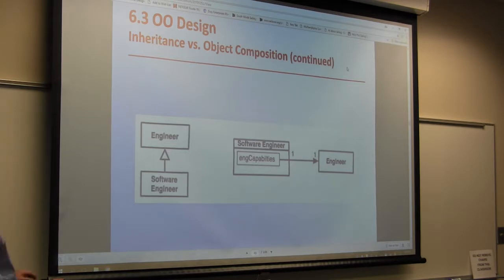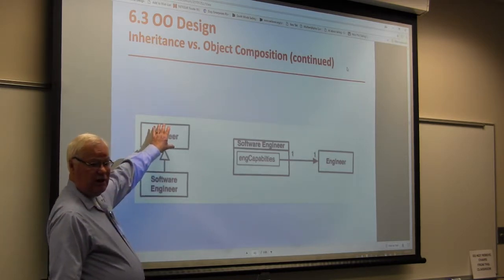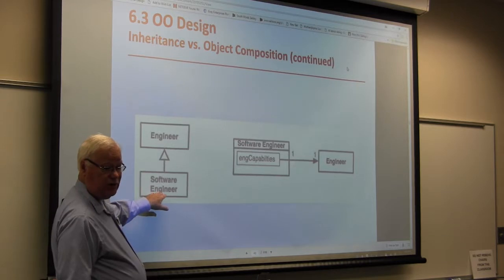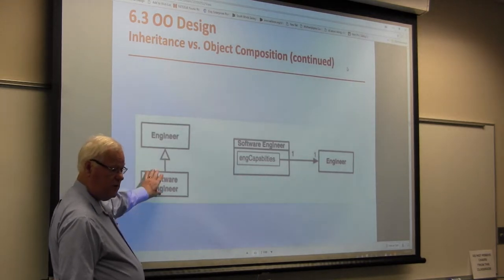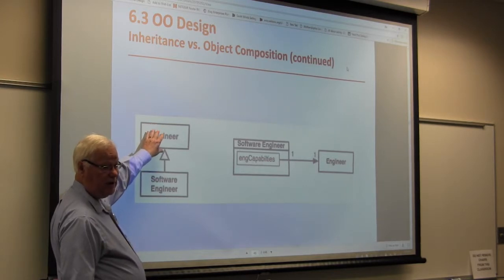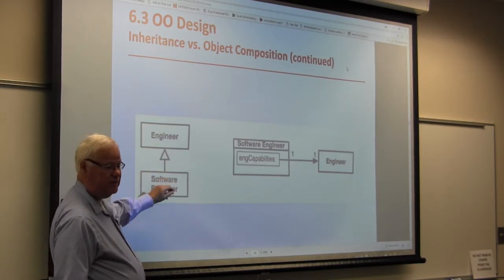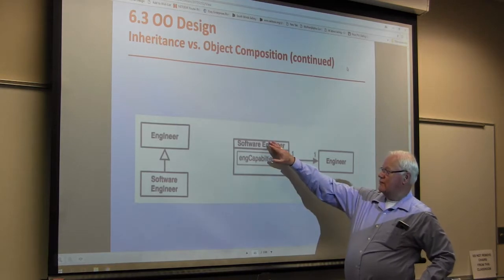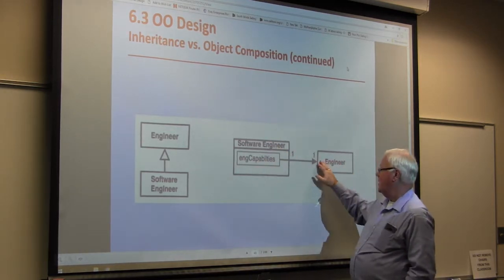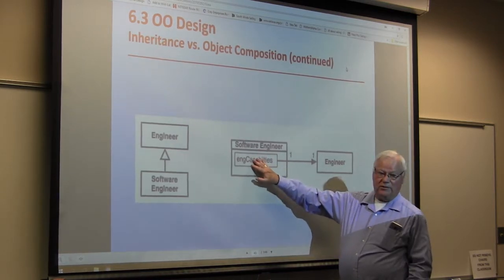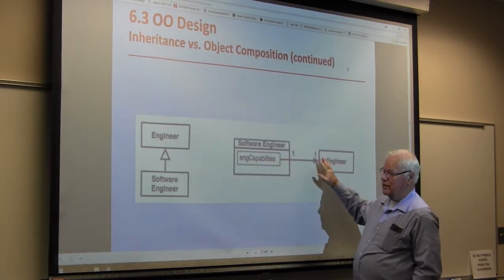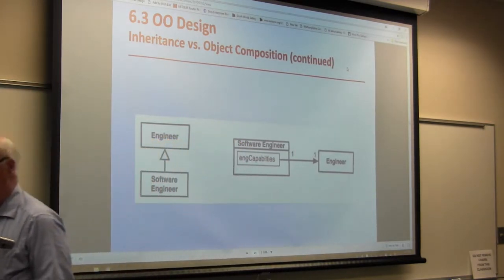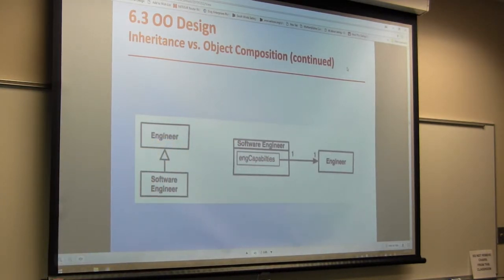We can describe what an engineer is and does, then add to that and make it more specific — what a software engineer does. A software engineer is an inheritance of everything an engineer does, plus dealing with software. Alternatively, using composition, software engineering has engineering capabilities brought in through the interface from engineering, plus more. They reach the same endpoint, but there are times when one is better than the other.